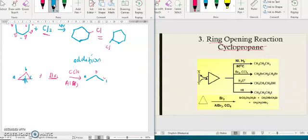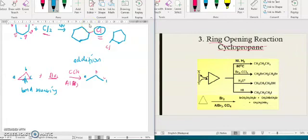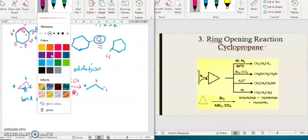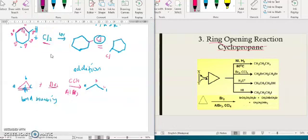So beza substitution dengan additions: kalau substitution, kita substitute satu atom sahaja. Kalau additions, kita tambah. Kenapa kena tambah? Sebab dia melibatkan bond breaking. Bonding yang putus. So sebab tu kita kena tambah. Kalau yang tengok yang atas ni, cyclohexane ni, so tiada bonding yang putus. Kat sini memang ada hydrogens. Kita cuma replace hydrogen dengan Cl. Tapi yang dekat bawah ni, kalau awak boleh tengok, bonding antara A dengan C dah tak ada. So dia melibatkan bond breaking.